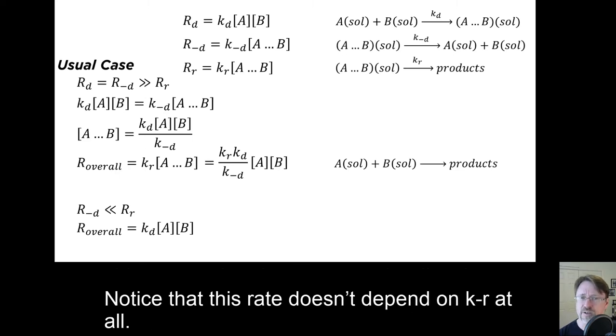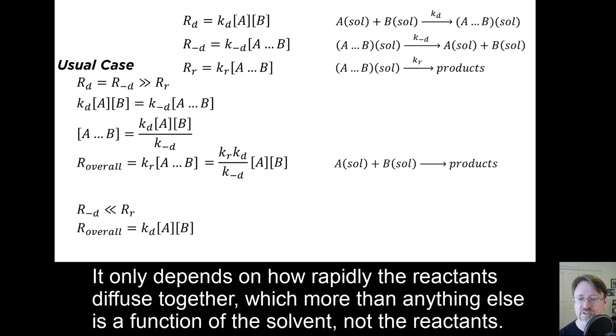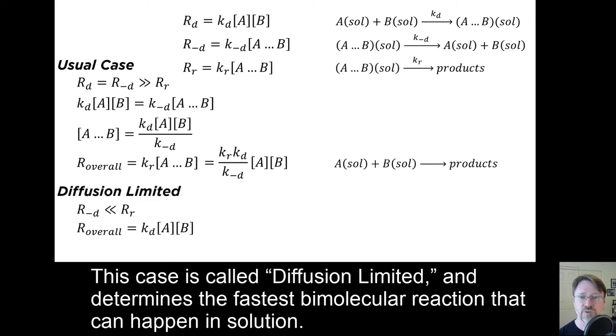Notice that this rate doesn't depend on Kr at all. It only depends on how rapidly the reactants diffuse together, which more than anything else is a function of the solvent, not the reactants. This case is called diffusion limited, and determines the fastest bimolecular reaction that can happen in solution.